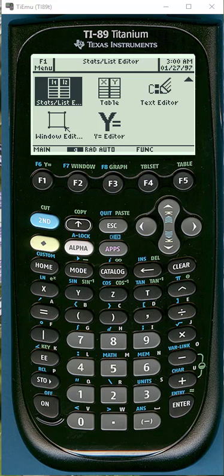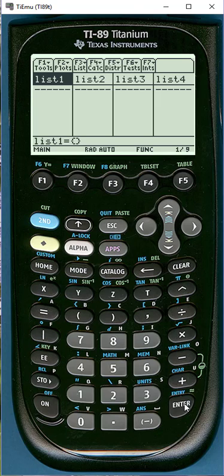In this video I'll show you how to run a one-way ANOVA in the TI-89. From the apps menu click on stats list editor and we're going to enter some random data in lists 1, 2, and 3.